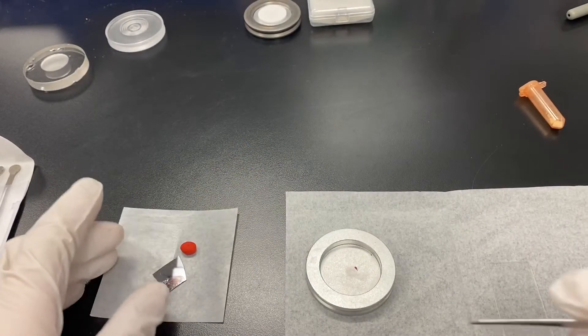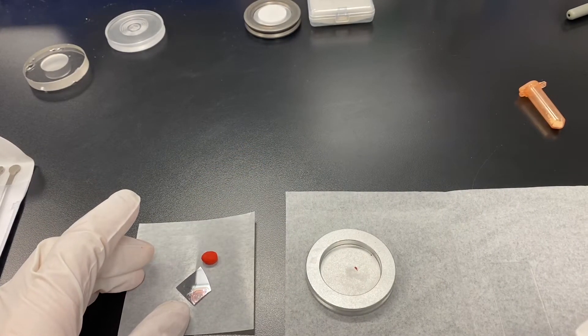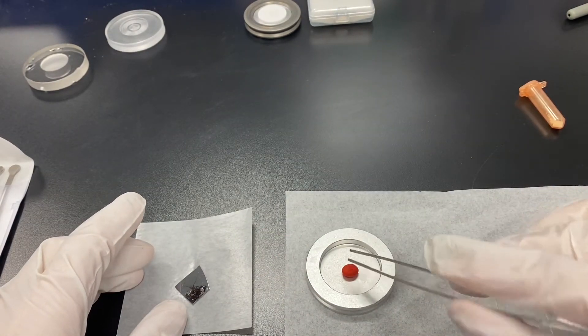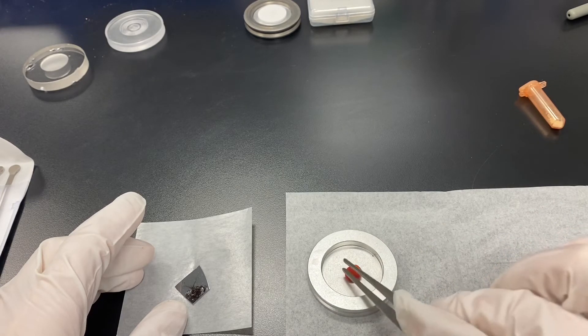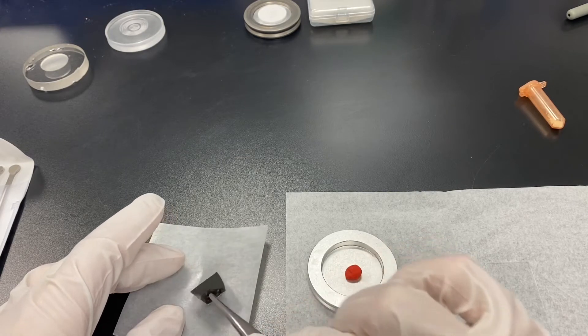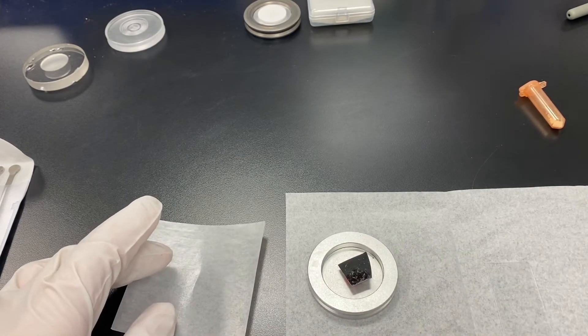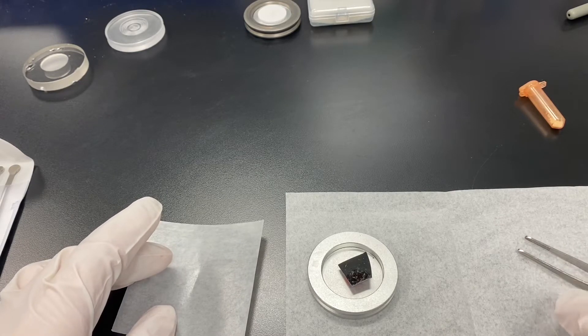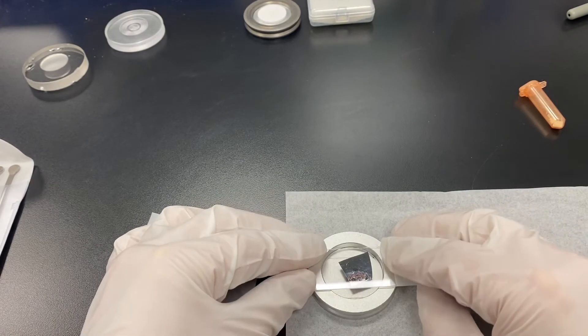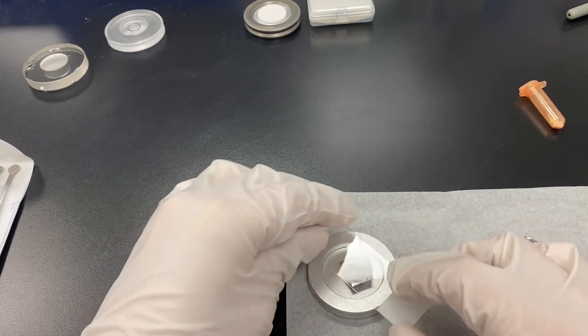For the sample preparation area for bulk materials or thin film, you should do like this. First you put the wax in the center of the sample holder to make sure it sticks tightly with the sample holder. And then put your sample on the surface of the wax. Then you use the glass slide to press tightly to make sure the surface of your sample is the same plane with the sample holder.